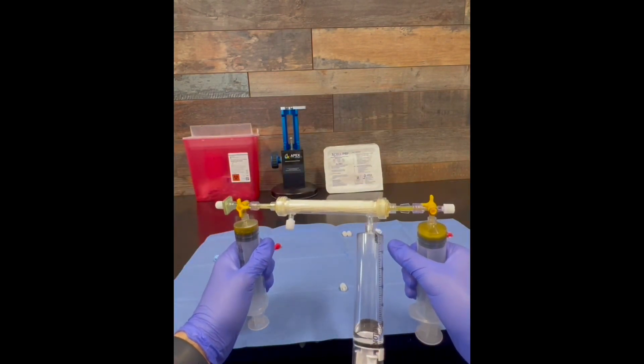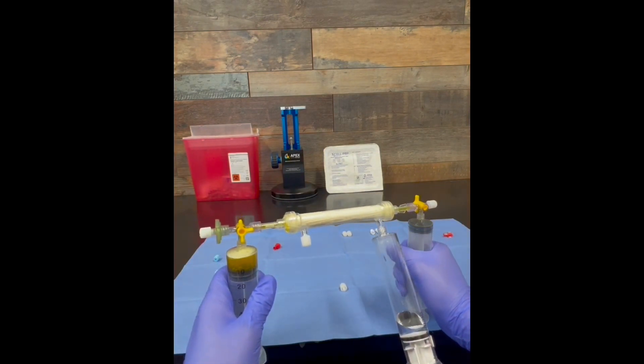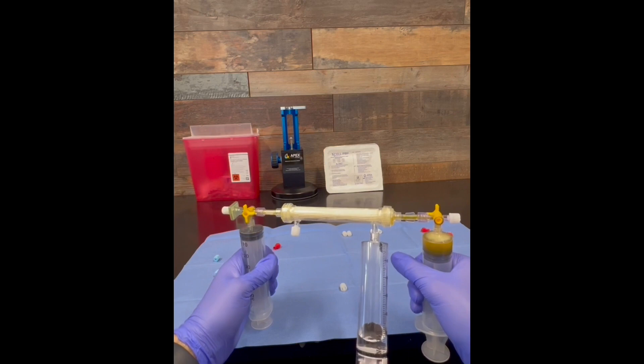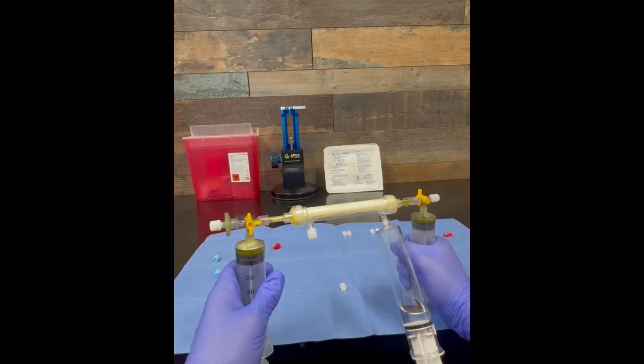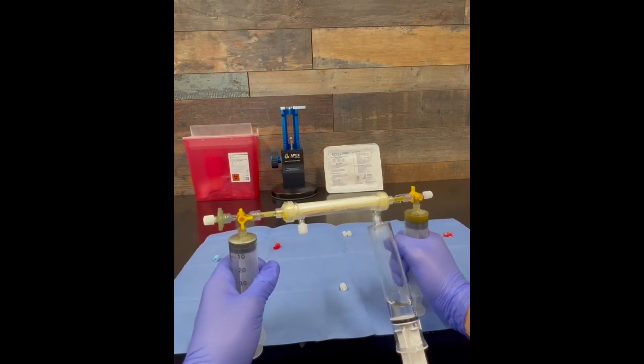Grab a hold of both 60 ml syringes and use the edge of a table or counter to alternate pushing the plungers of each syringe in, causing the platelet-poor plasma to pass back and forth through the main filter.